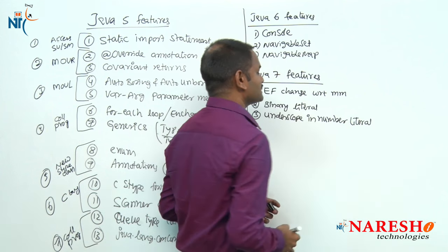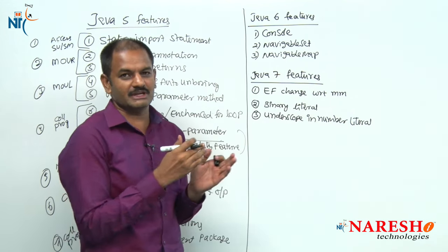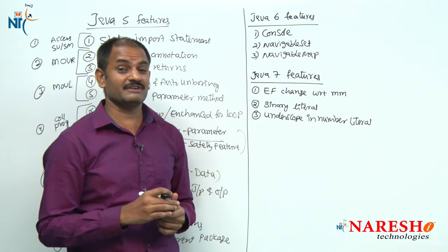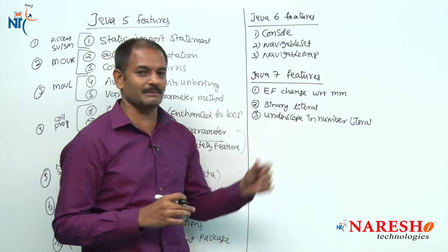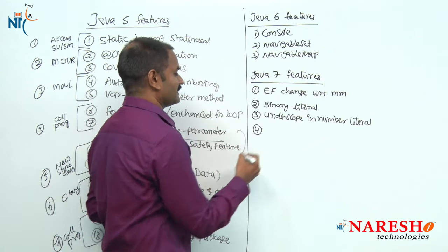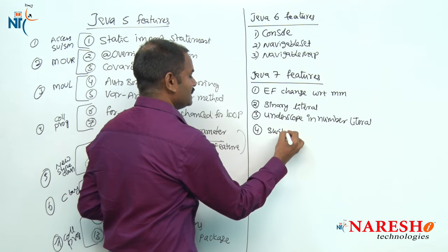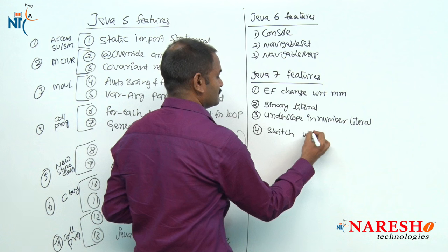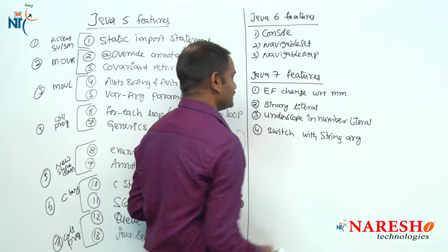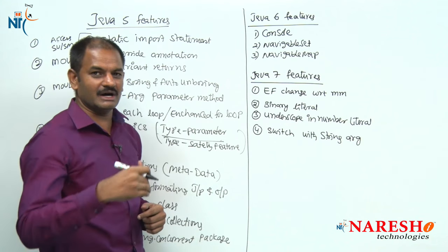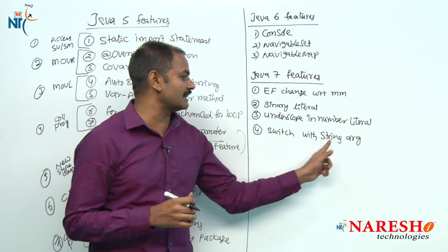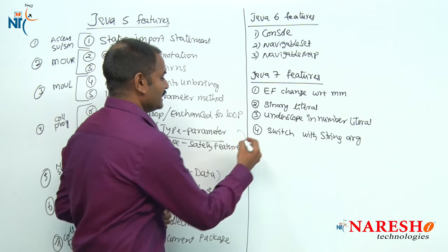Underscore is used for separating words — in variable names, class names, and method names we can use underscore. From Java 7 onwards, we are also allowed to use underscore in number literals. The fourth feature is very interesting: switch is enhanced to accept a String as an argument. Previously, switch allowed only int or int-compatible arguments, but from Java 7 onwards, switch accepts String arguments as well.